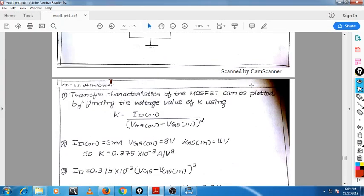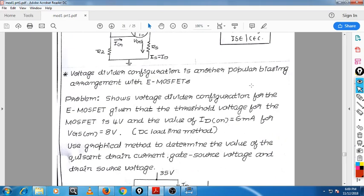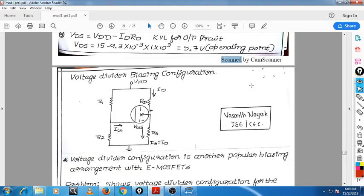Dear students, the last problem in this category is a voltage divider biasing configuration. This is the circuit diagram for voltage divider biasing configuration. I am using an enhancement MOSFET. This is the drain resistance, this is the drain current, this is the source resistance, and this is VGS. This is the voltage divider resistance R1 and R2.